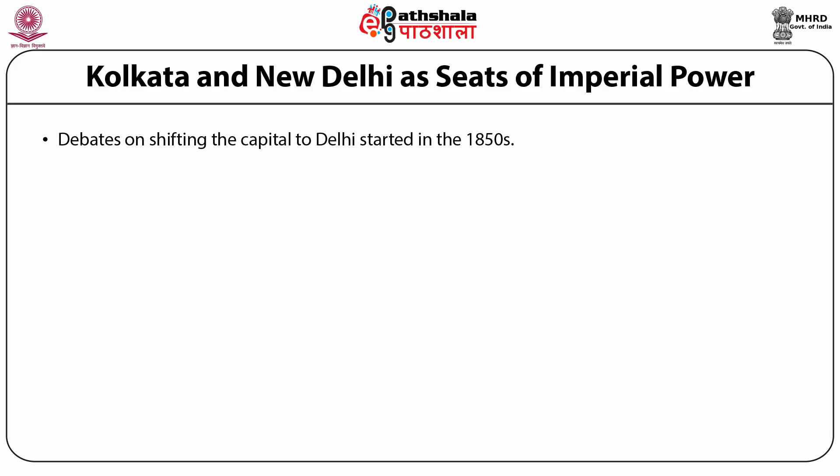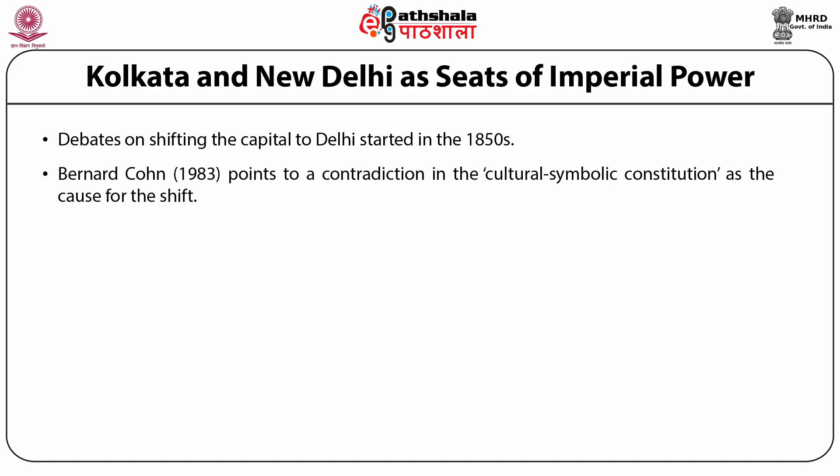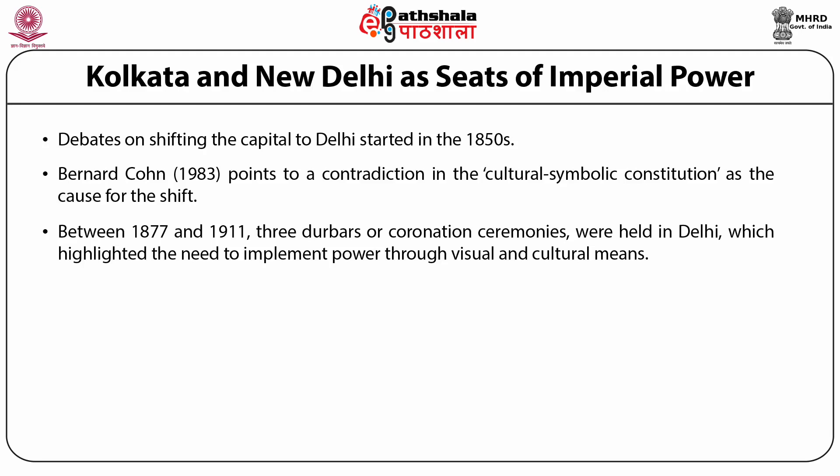By the 1850s, debates around the shift of the capital city had already begun and coincided with the Sepoy Mutiny of 1857. Bernard Cohn suggests that the relationship of authority between the colonizer and the colonized underwent significant changes around the time of the mutiny. Cohn further argues that previous attempts of governor-generals to impose authority in the imperial framework of the Mughals led to a contradiction in the cultural symbolic constitution. By 1877 and 1911, three coronation ceremonies or darbars were held in Delhi. The first was the imperial assembly in 1877 that crowned Victoria as the Empress of India, the second in 1903 was the coronation of Edward VII, and the third in 1911 was the coronation of George V. These darbars consolidated the image of Delhi as an imperial city and paved the way for the construction of the colonial capital.